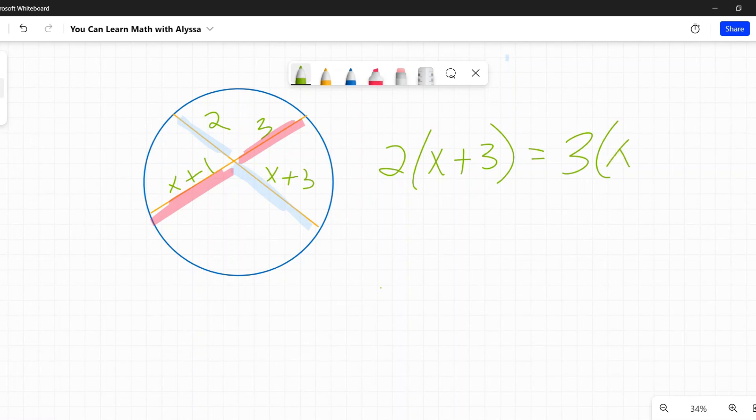So we have the two parts of this chord, we would multiply those together, 2 times X plus 3. And then we have the two parts of this chord, and we multiply those together, 3 times X plus 1. And now we're back in algebra land, and you just solve it, you kind of forget about this for a minute. And you're just going to solve it like you would any other algebra problem.